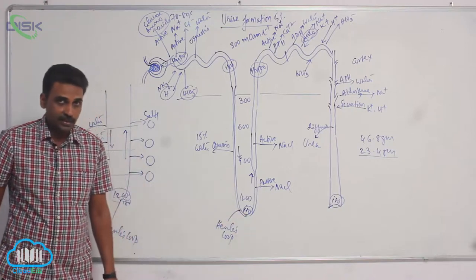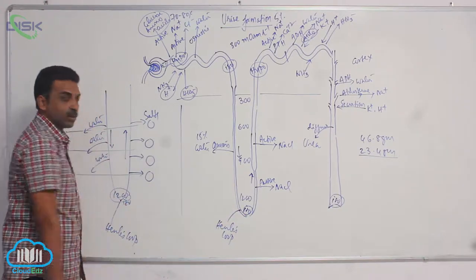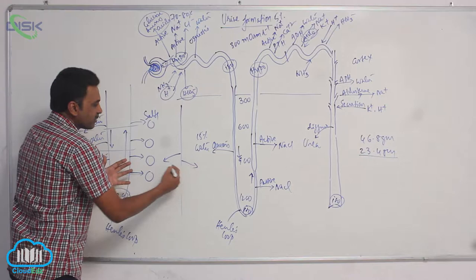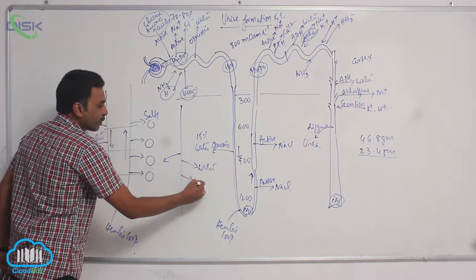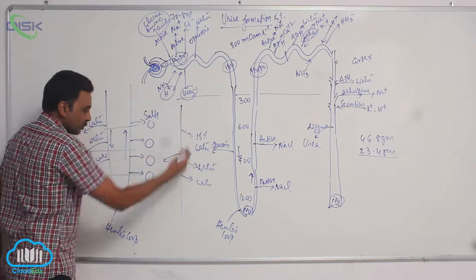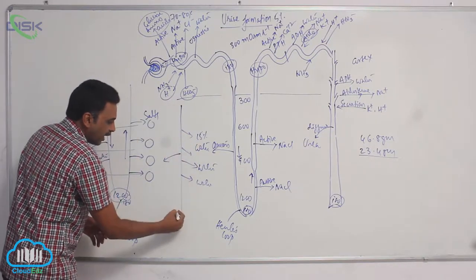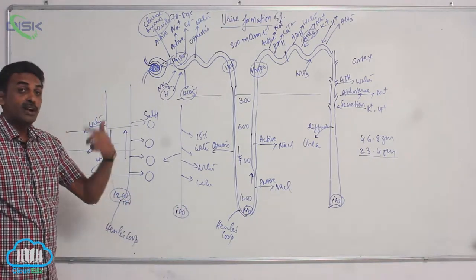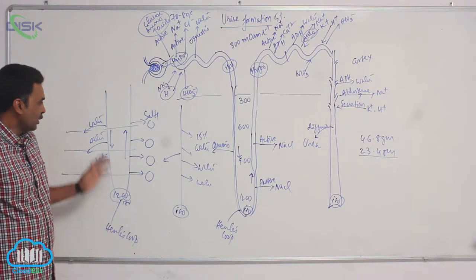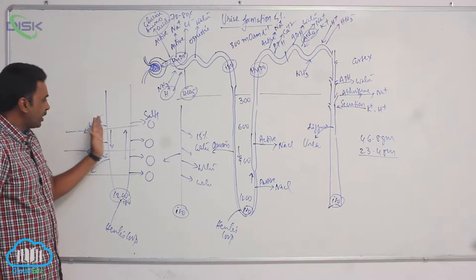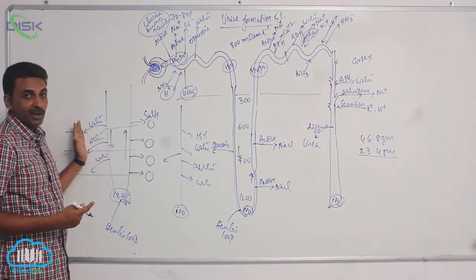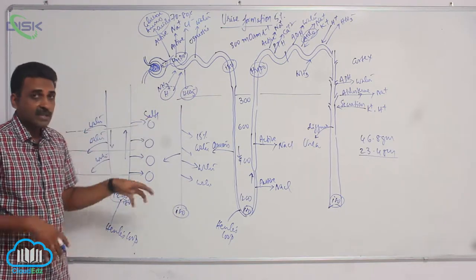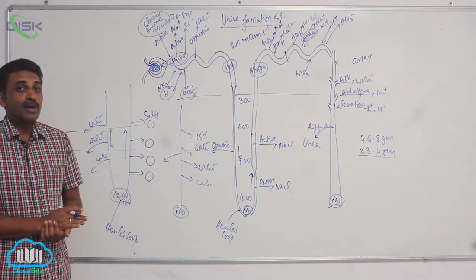The same thing occurs in the collecting duct — because of the salt concentration in the medullary interstitium, water also goes outside from the collecting duct. You can see that because of the salt concentration, water leaves throughout, and finally the urine produced is isotonic to medullary fluid and hypotonic to blood. Movement of water from the renal fluid into medullary fluid in the descending limb and collecting duct occurs because of salts present inside the medullary interstitium.